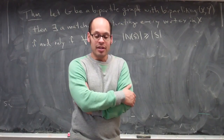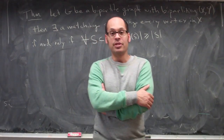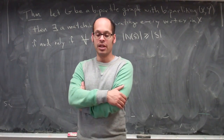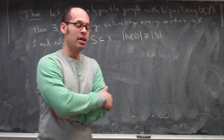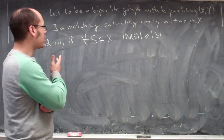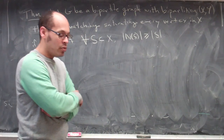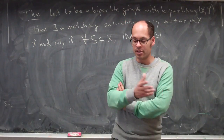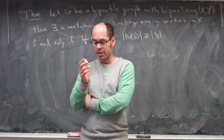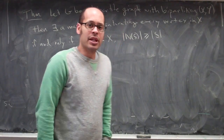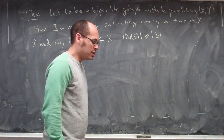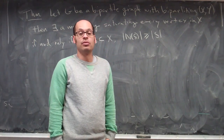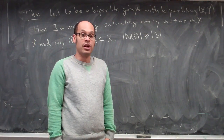In the last lecture, I talked about some basic facts about finding matchings in graphs, and in particular, I gave a theorem about when there exists matchings in a bipartite graph, which I'll go over in just a moment. This time what I'd like to do is give the most famous application of that, which is to the so-called marriage problem.